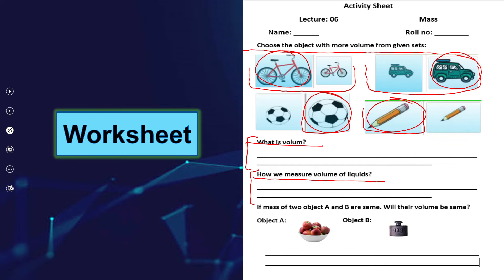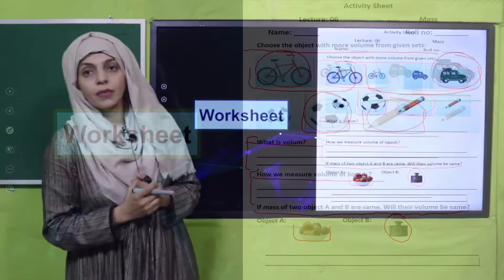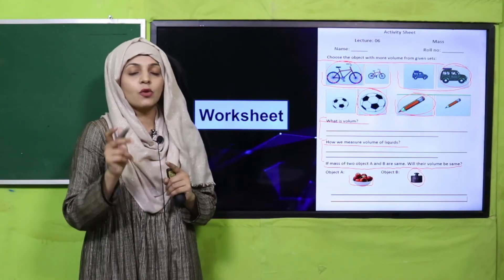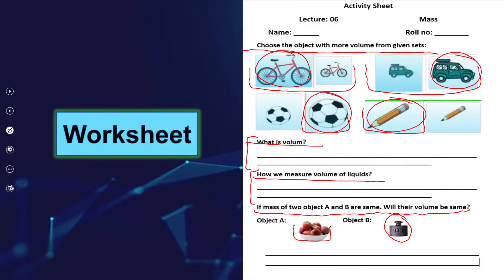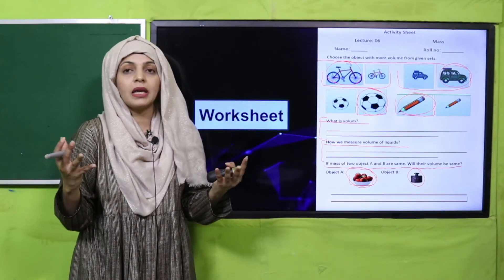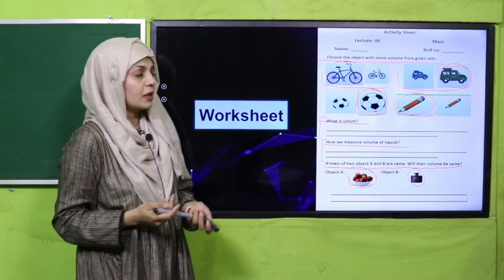If the mass of two objects A and B are the same — for example, 1 kg of apples and 1 kg of iron bar — will their volume be the same? No, the volume is not similar. Now tell me which one has more volume and circle it. Apple has more volume because it is occupying more space. Whatever object occupies more space has more volume.